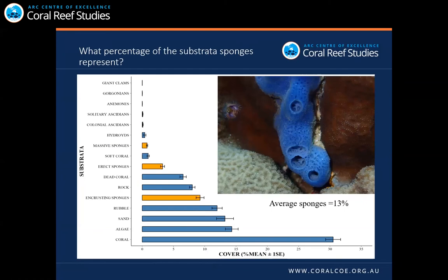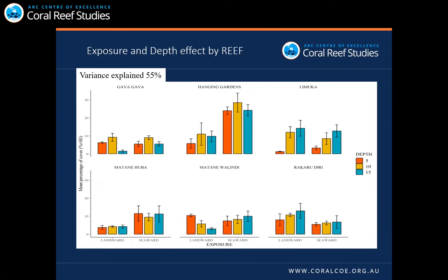Our results indicate that corals are still the dominant category in inshore reefs of Kimby Bay, and that sponges as a group represent 13% of the substratum. In the graph, cover is shown on the x-axis and categories on the y-axis. Sponges are divided by morphological groups, highlighted in yellow: massive sponges, erect sponges, and encrusting sponges. Encrusting sponges are the most important subgroup, representing 9% within the sponge category.